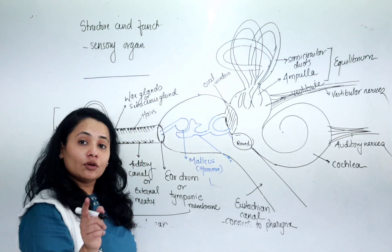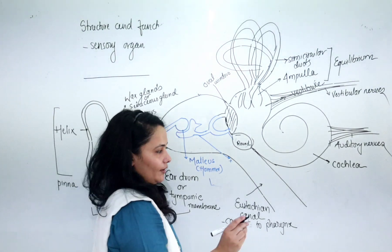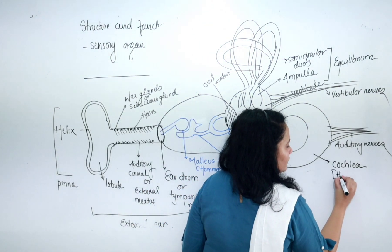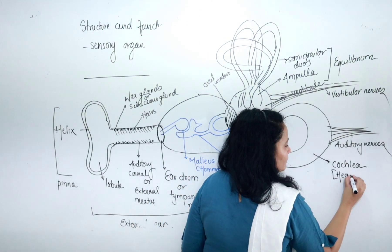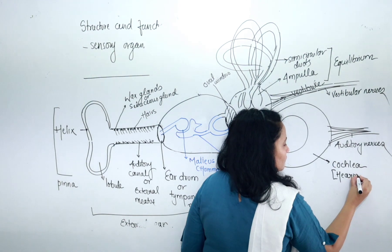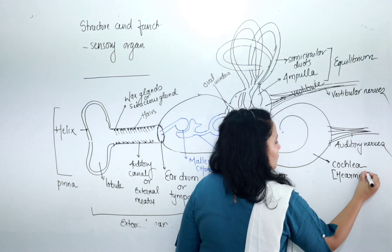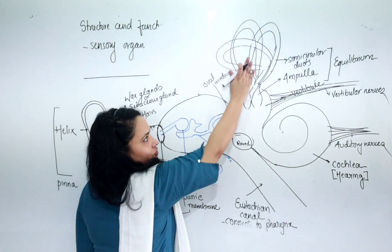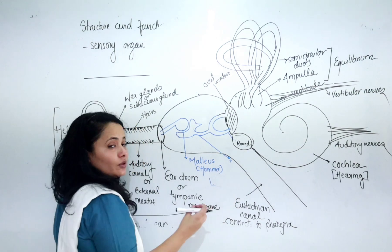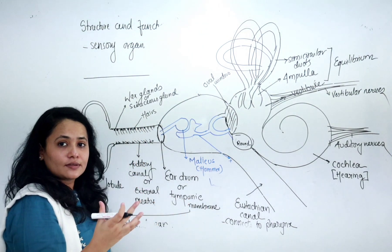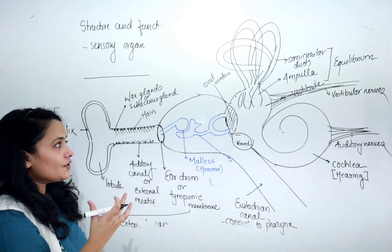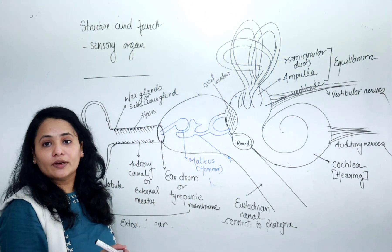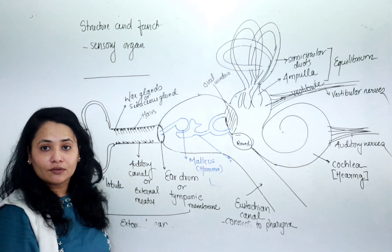The structure known as the cochlea is a shell of snail-like structure. The function of the cochlea is hearing. Auditory nerves come out from the cochlea. The internal ear is also known as the labyrinth.